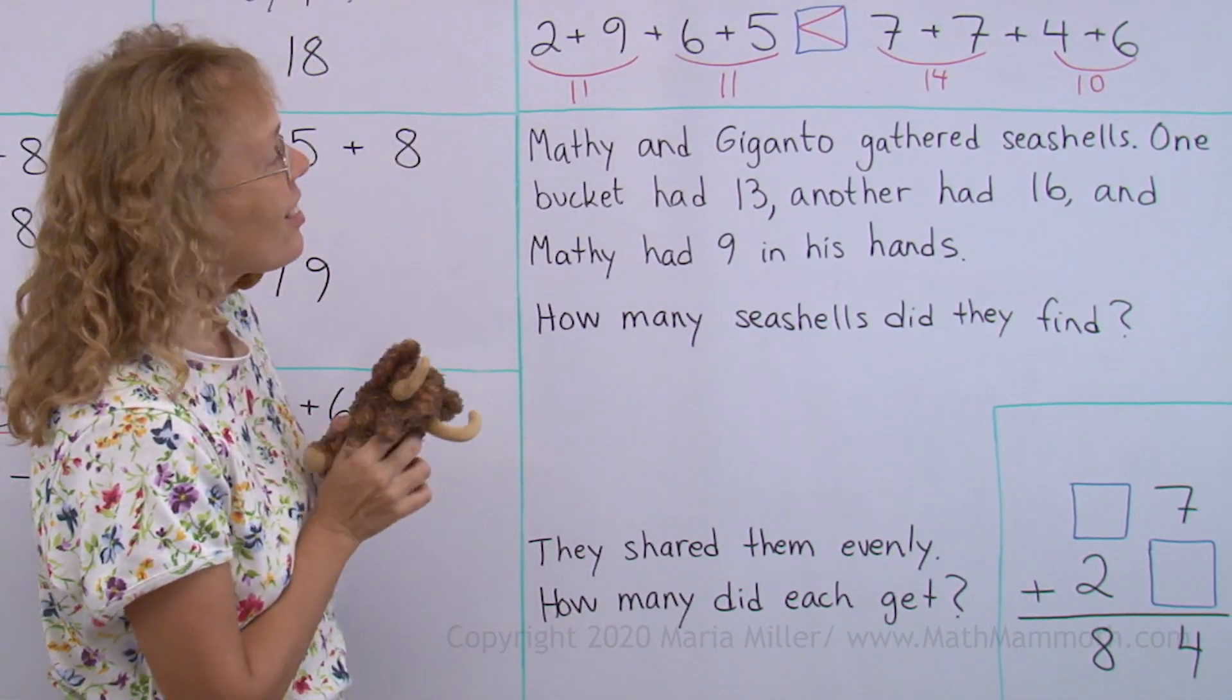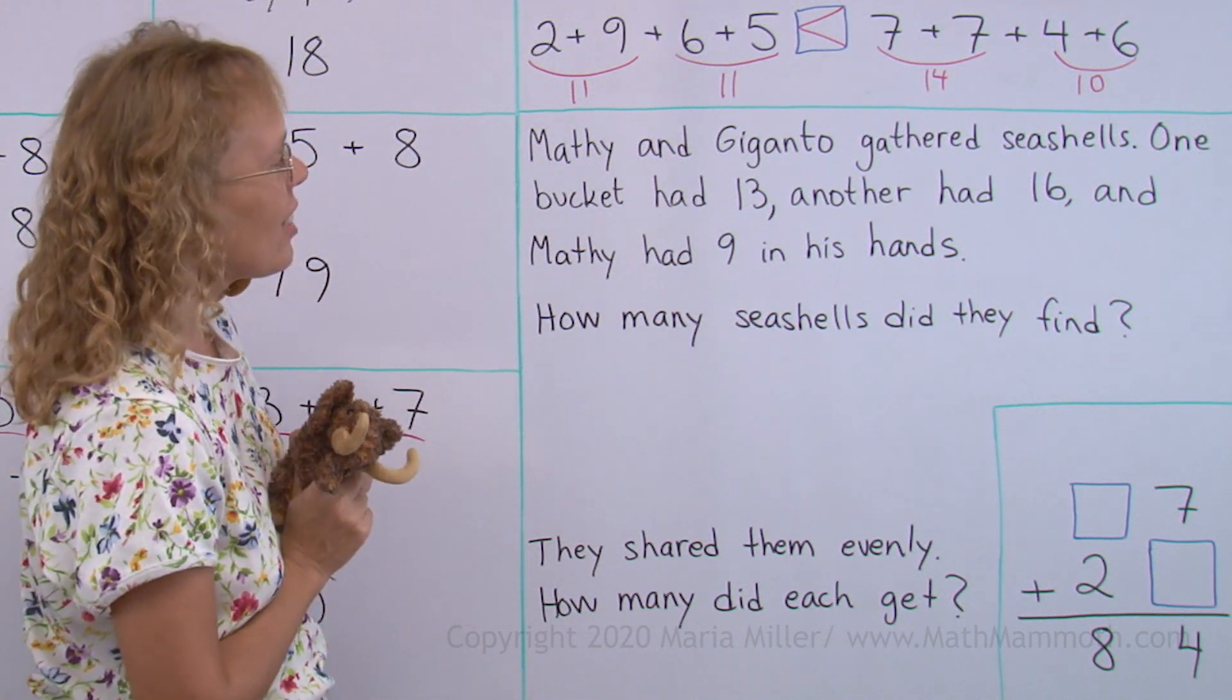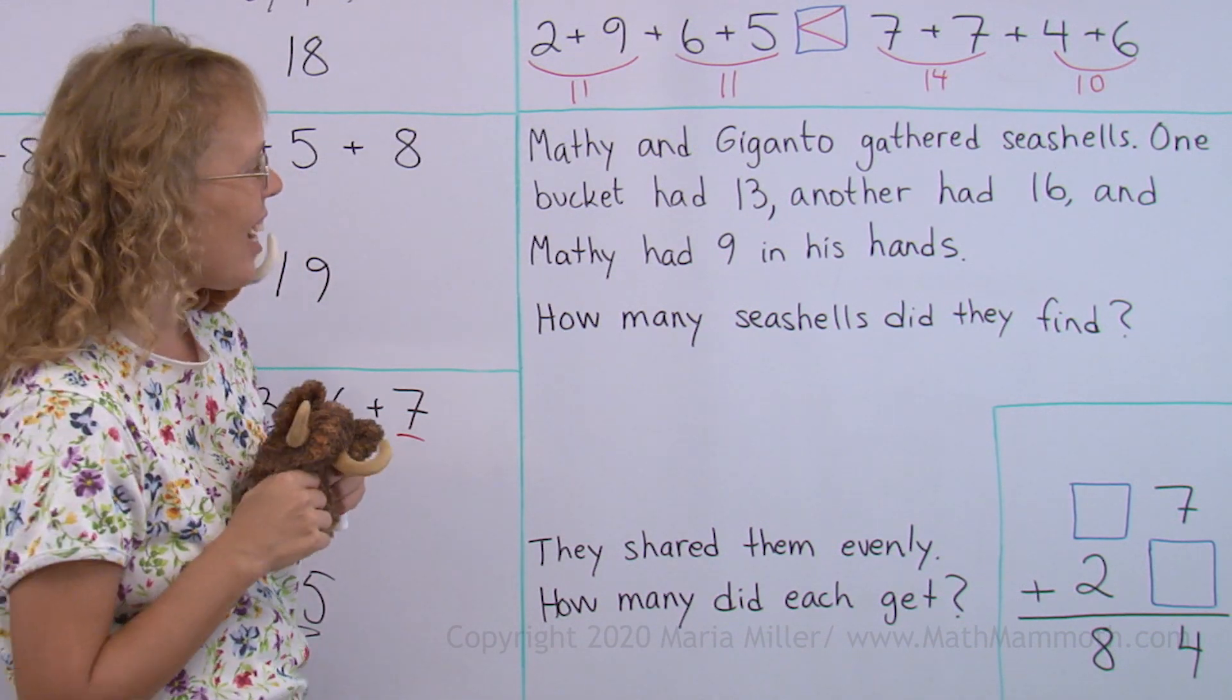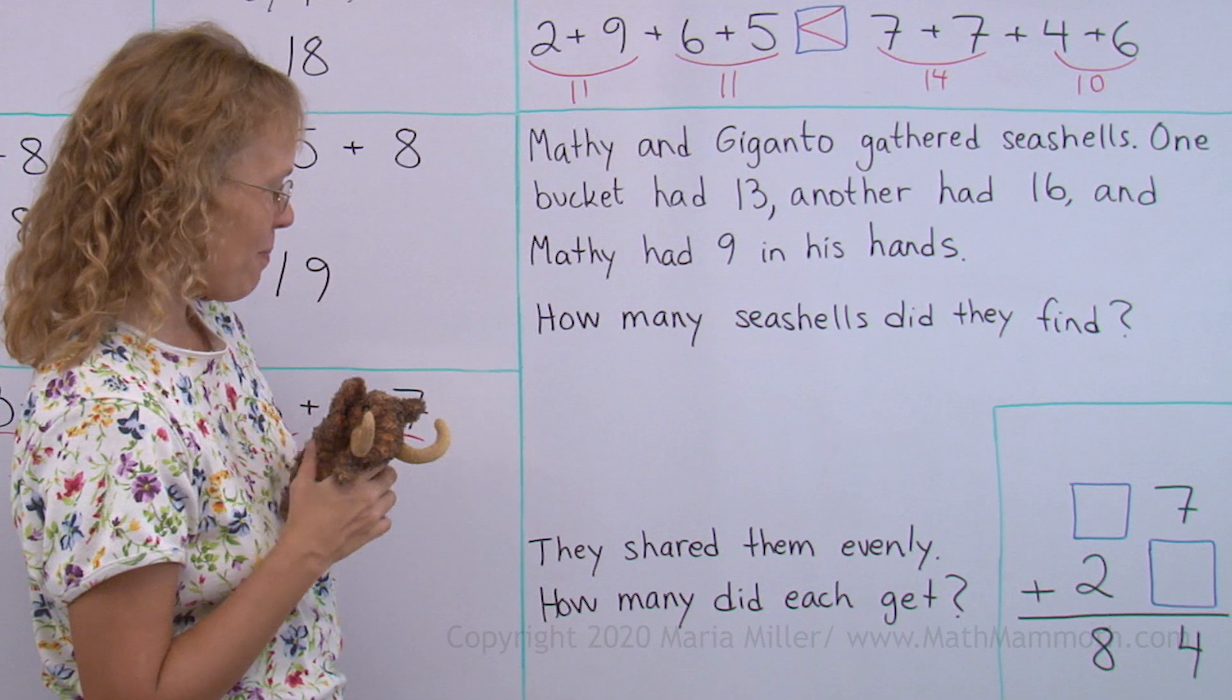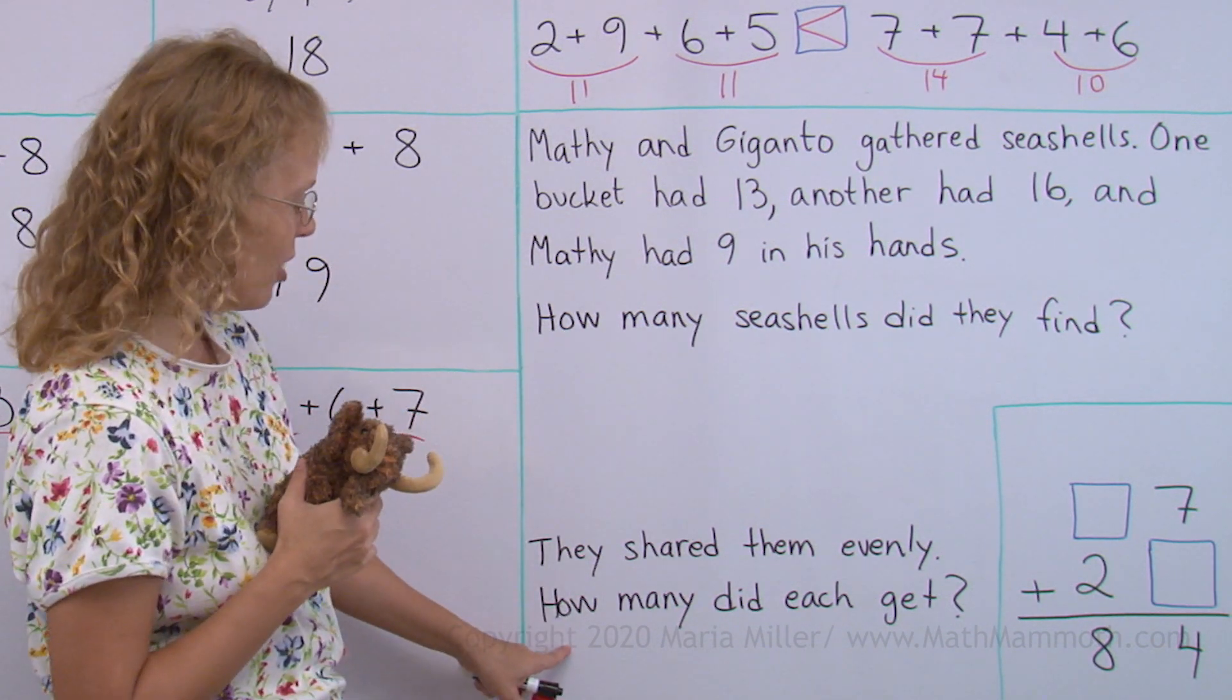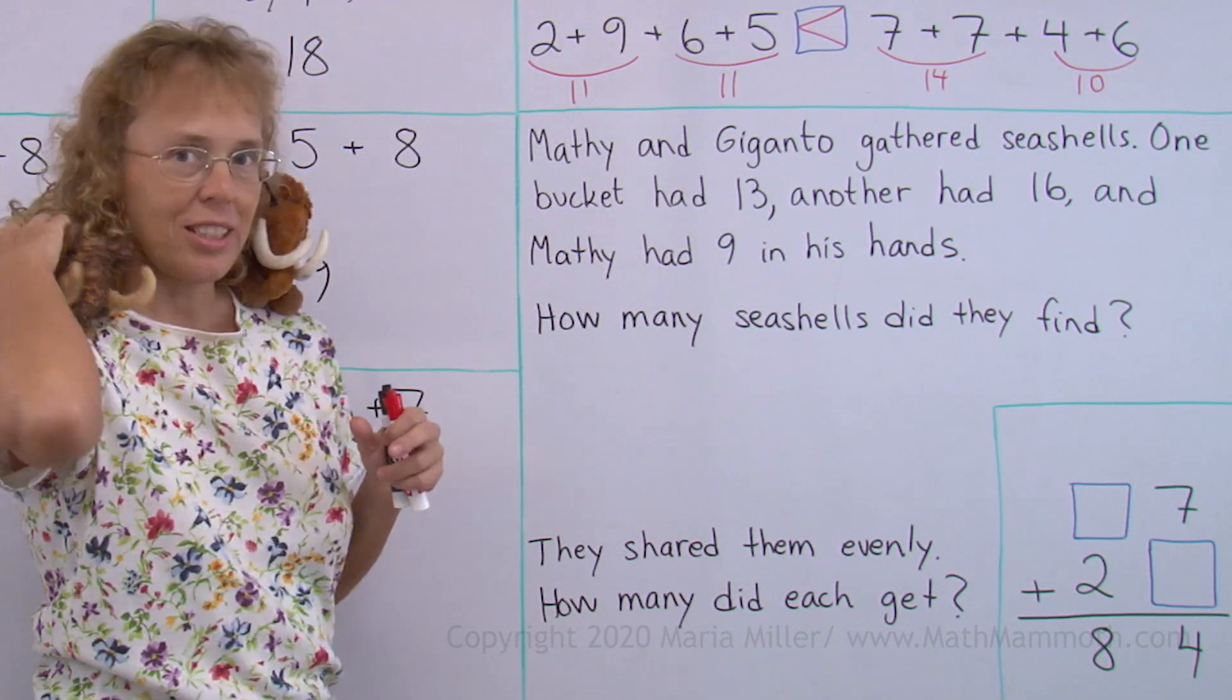Matty and Giganto gathered seashells. One bucket had 13, another had 16, and Matty had 9 shells in his hands. How many seashells did they find? Okay. They shared them evenly. How many did each get? Let's see if we can solve this problem.